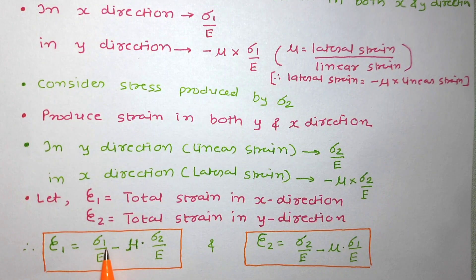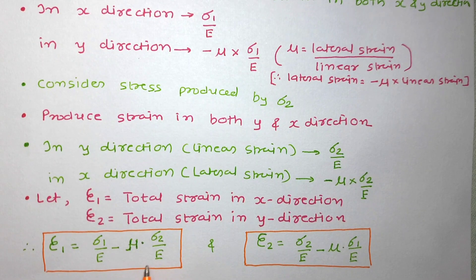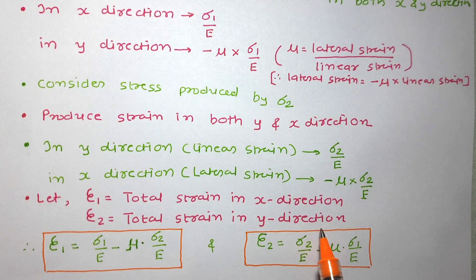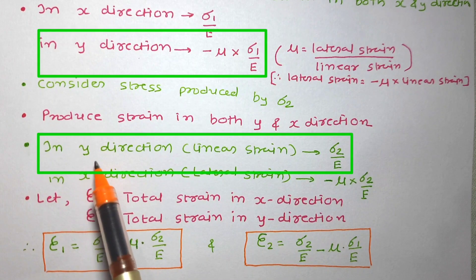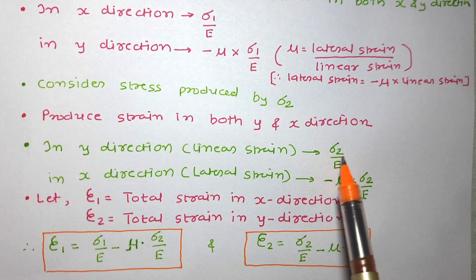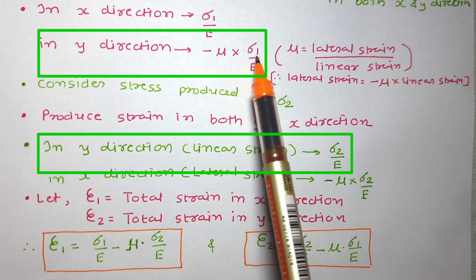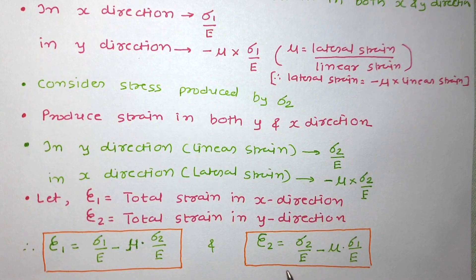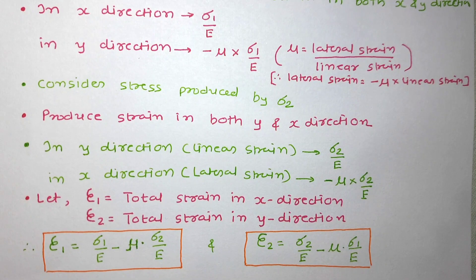Taking the summation of strains in each direction: epsilon 1, the total strain in the x-direction, equals sigma 1 upon E minus mu into sigma 2 upon E. And epsilon 2, the total strain in the y-direction, equals sigma 2 upon E minus mu into sigma 1 upon E. This is the relationship between stress and strain in a two-dimensional system.